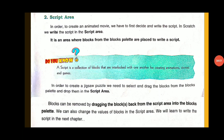Let's see the Script Area. In order to create an animated movie, we have to first decide and write a script. In Scratch, we write the script in the Script Area. It is an area where blocks from the blocks palette are placed to write a script. A script is a collection of blocks that are interlocked with one another for creating animations, stories, and games. To create a script, we need to select and drag the blocks from the blocks palette and drop them in the script area.